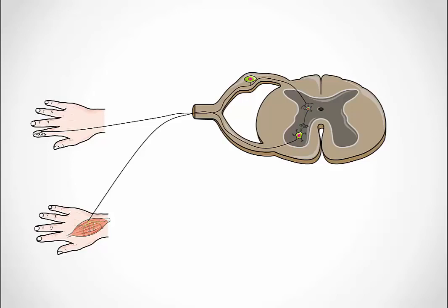All reflexes have five similar properties. Number one, the receptor. This is a special transducer that registers the particular stimulus and transforms it into an electrical response.